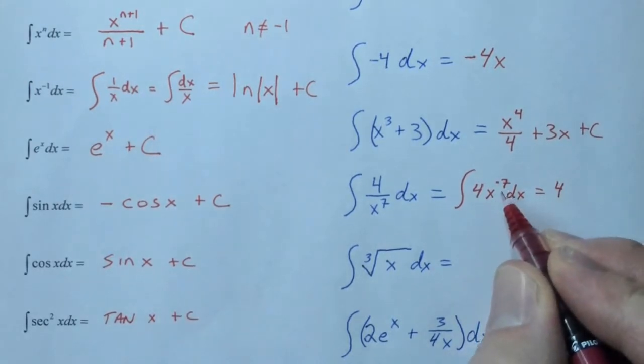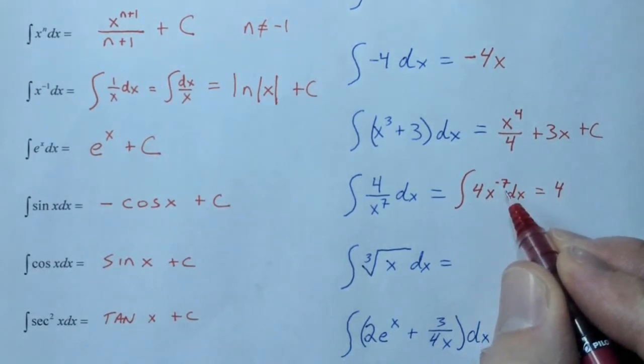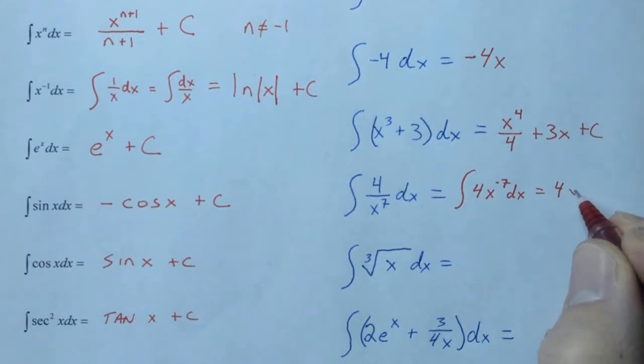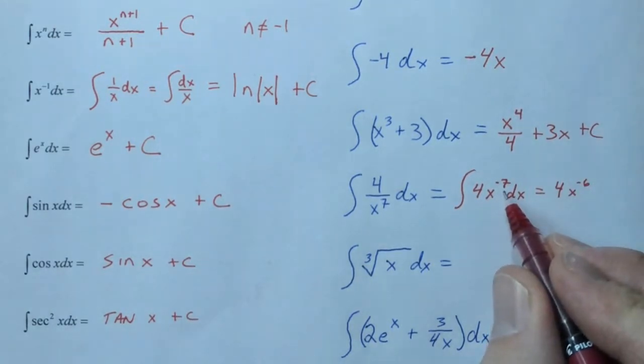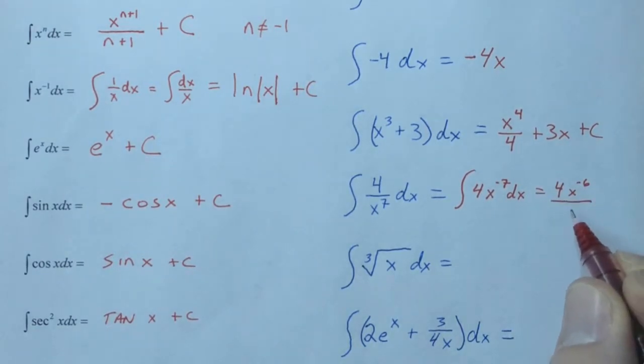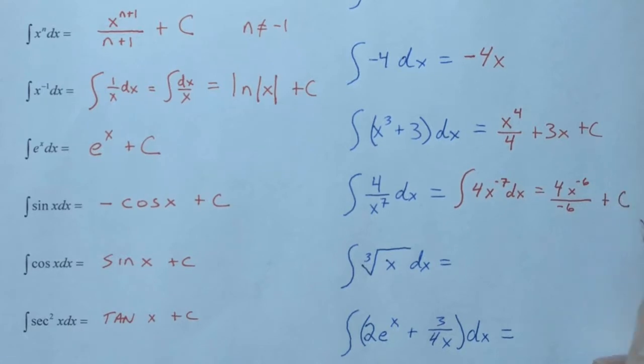And then we're going to add 1 to negative 7. Be careful. What's negative 7 plus 1? That's right, it's negative 6. Allow us to do this one right, negative 8. Okay, but negative 7 plus 1 is negative 6. And then we divide by that new exponent as well. And, of course, plus c.